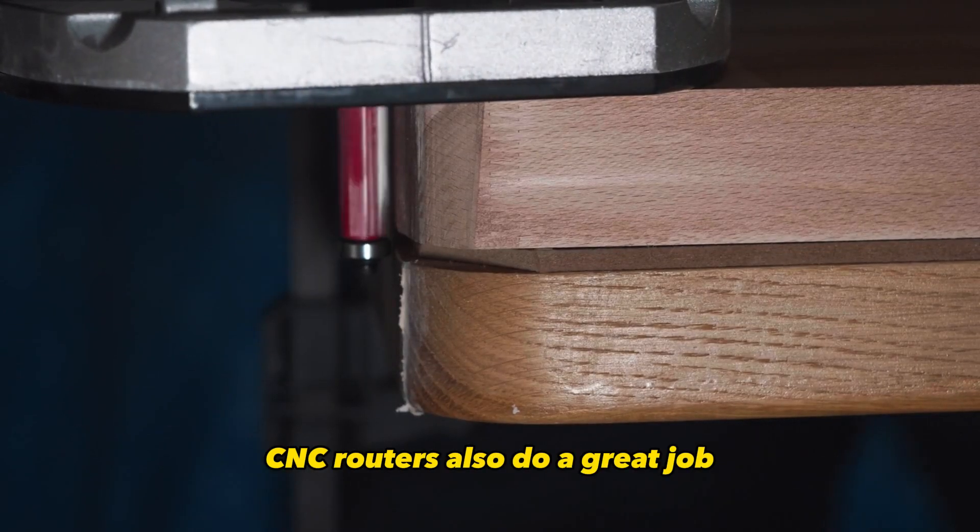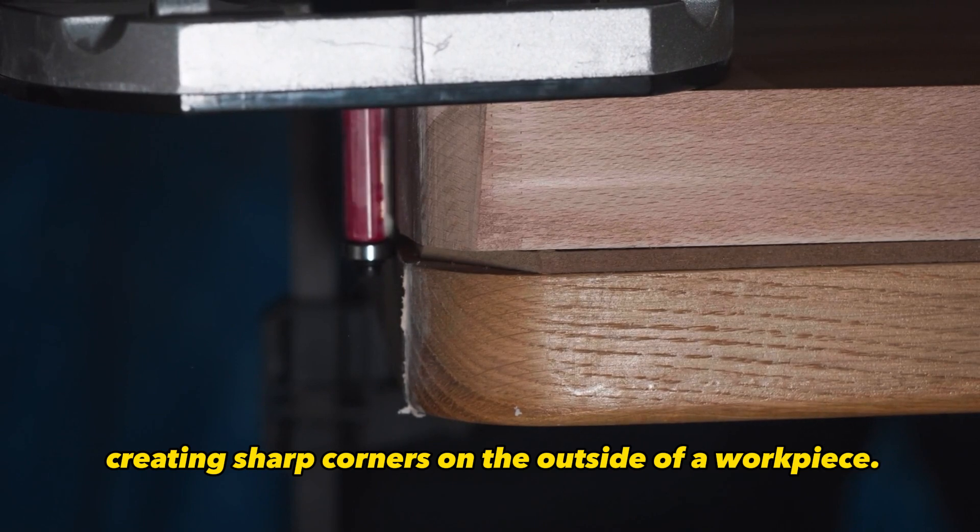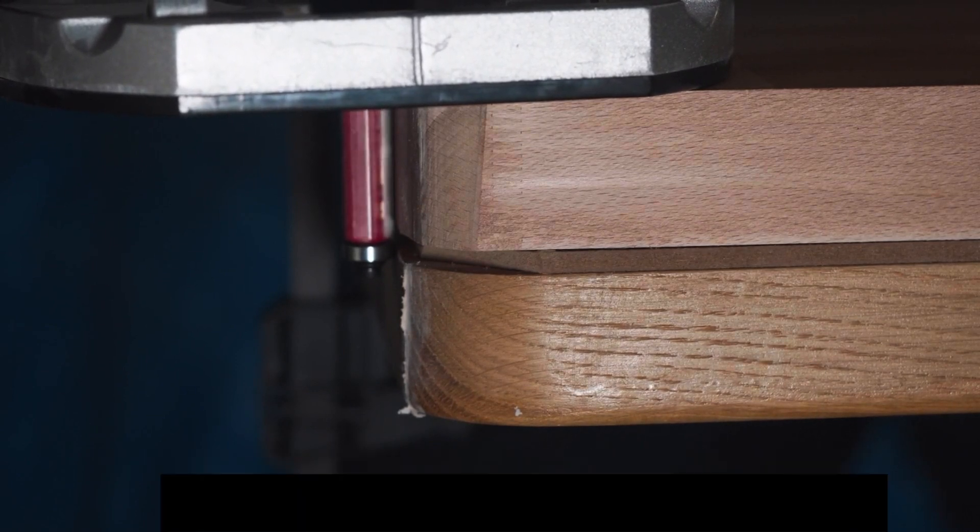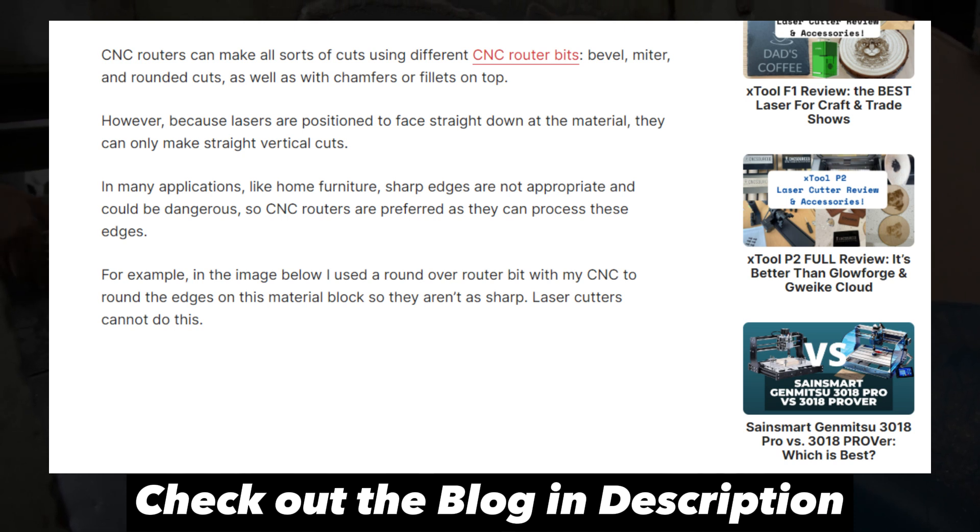CNC routers also do a great job creating sharp corners on the outside of a workpiece. But they struggle to cut sharp inside corners, for example pockets, interior cutouts, and cross intersections.